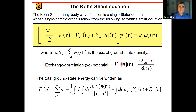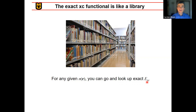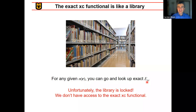In a sense, the exchange-correlation functional is like a library where you have many, many books. For any given density n(r), you can go to the library shelf that corresponds to that density and look up what E_xc is. What the Hohenberg-Kohn theorems guarantee is that this library exists — but unfortunately the library is locked, so we can't get in. That would have implied solving the exact many-body problem for all possible densities, which is not feasible.